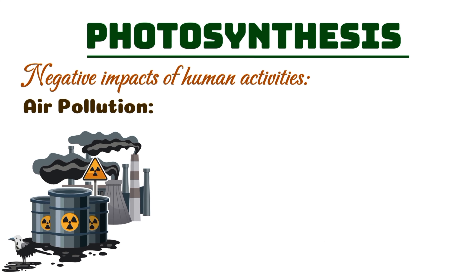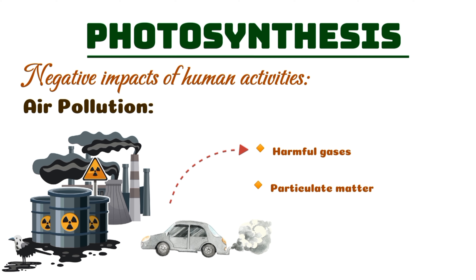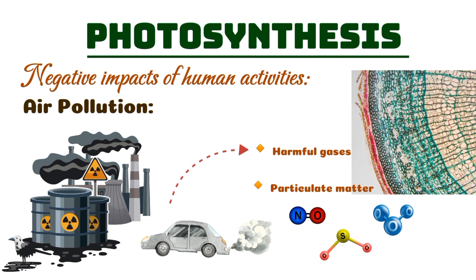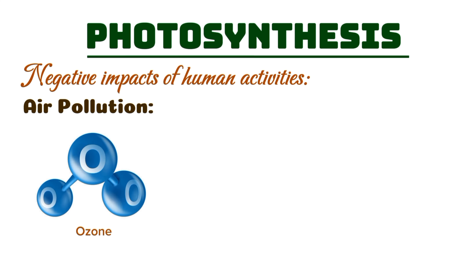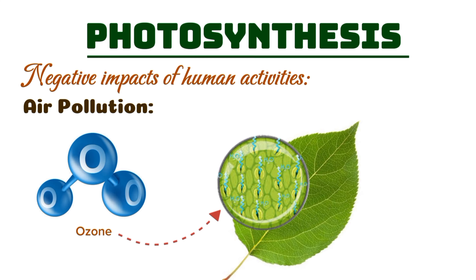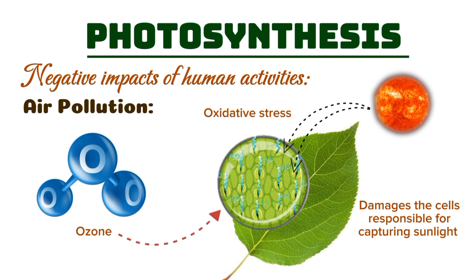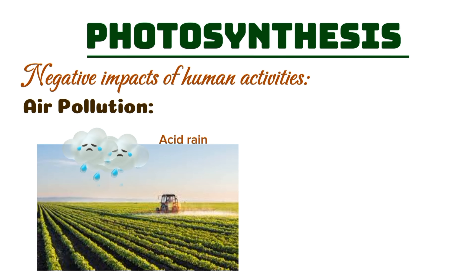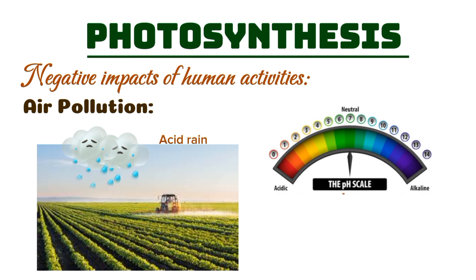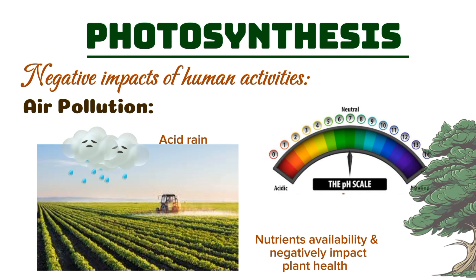Industrial emissions and vehicle exhaust release harmful gases and particulate matter into the air. Pollutants such as nitrogen oxides, sulfur dioxide, and ozone can directly damage plant tissues, hindering their ability to perform photosynthesis. Ozone, for example, enters the plant's stomata and causes oxidative stress, damaging the cells responsible for capturing sunlight. Over time, this can reduce plant growth and even lead to plant death. Acid rain, a result of air pollution, also alters soil pH levels, which affects nutrient availability and negatively impacts plant health.